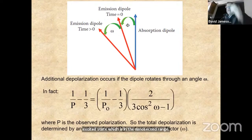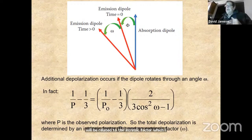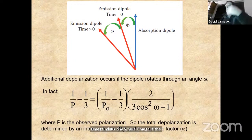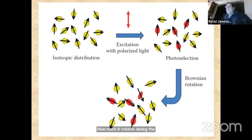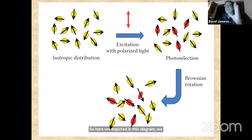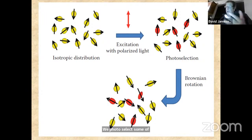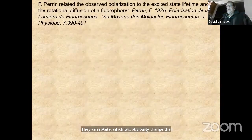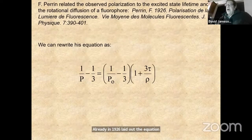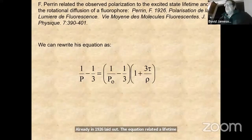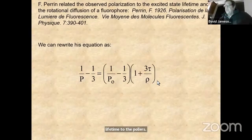The observed polarization is related to the intrinsic factor when there's no rotation, over two times (3cos²ω − 1), where ω is the extrinsic factor — how much it rotates during the excited state lifetime. We have an isotropic random distribution of orientations, we photo-select some of them, and during the excited state process they can rotate, which changes the observed polarization or anisotropy. Francis Perrin in 1926 laid out the equation relating polarization to the lifetime and to the rotational rate of the molecule.